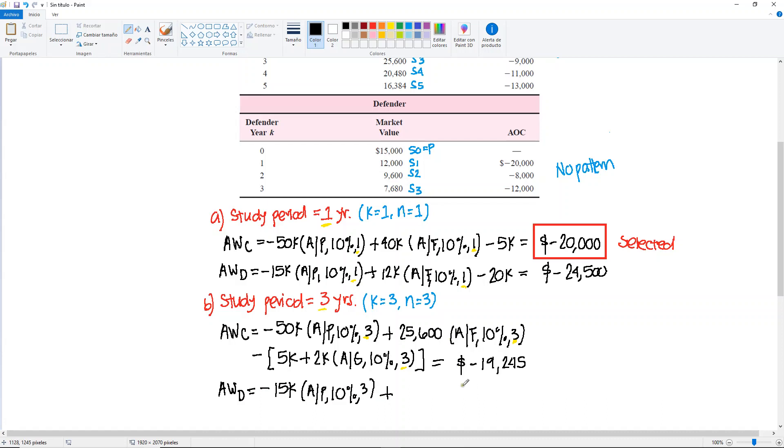10% for three years, plus S3, which is going to be 7,680. We convert this, find A given F, 10%, three years.